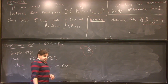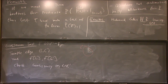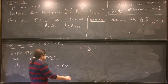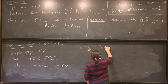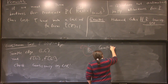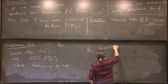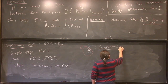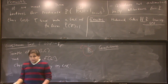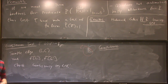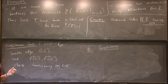We have the code; now we need to define the test. To encode we used the vertices; for the test we'll use the edges. For an edge between L and L', you expect the two values to be consistent on the intersection of L and L'. So the test: sample an edge L, L', query the word on coordinate L and coordinate L', and check consistency on the intersection.